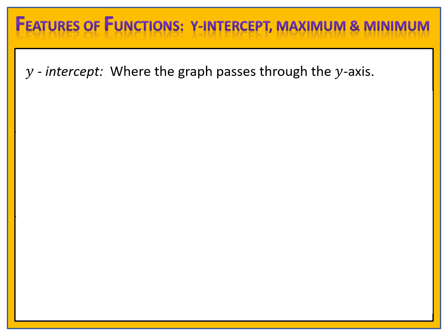A couple of important notes about the y-intercept. First of all, the y-intercept is where the graph passes through the y-axis. Remember on the coordinate plane that the y-axis is the vertical, or up and down, axis. The y-intercept is where the graph crosses through that axis.